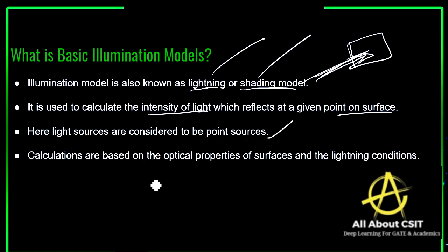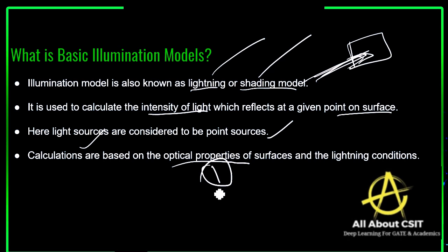Here light sources are considered to be a point source. Calculations are completely based on the optical properties of the surface and the lighting conditions — how the lighting appears, whether the image is bright or dark, and whether direct or indirect light is reflecting.